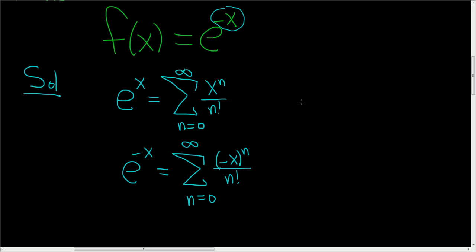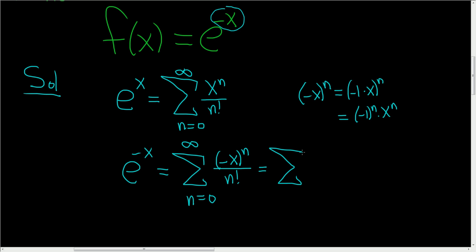Now we can do some algebra here to clean things up. Negative x to the n, you can think of this as negative 1 times x to the n. And then using properties of exponents, this is negative 1 to the n times x to the n. So we can rewrite this as the sum, as n runs from 0 to infinity, of negative 1 to the n over n factorial times x to the n.